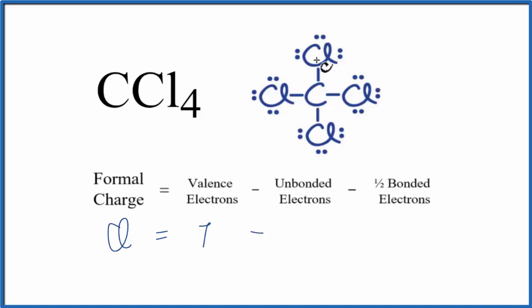We'll subtract the unbonded valence electrons. These are the electrons that aren't involved in chemical bonds. They're lone pairs. We have 2, 4, 6 of those.